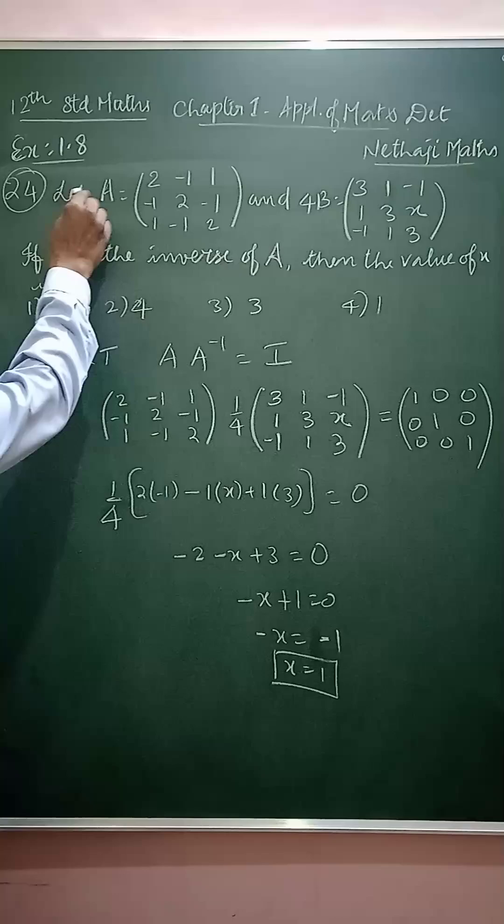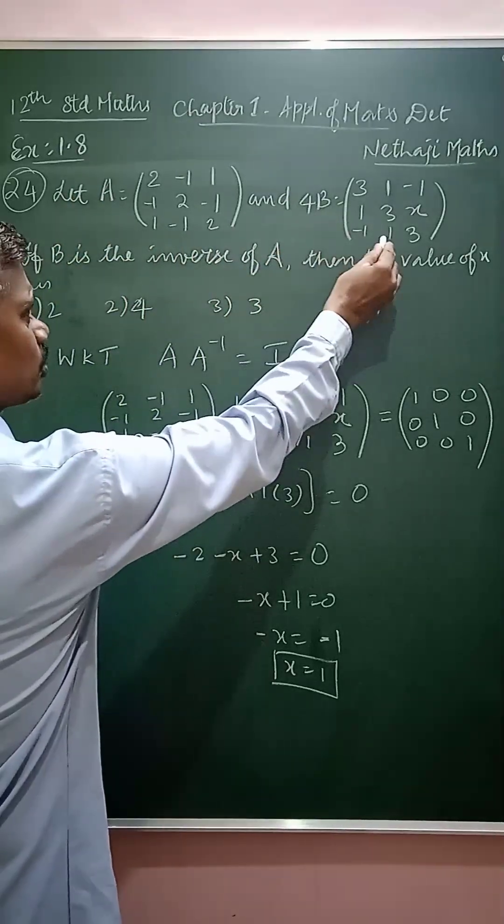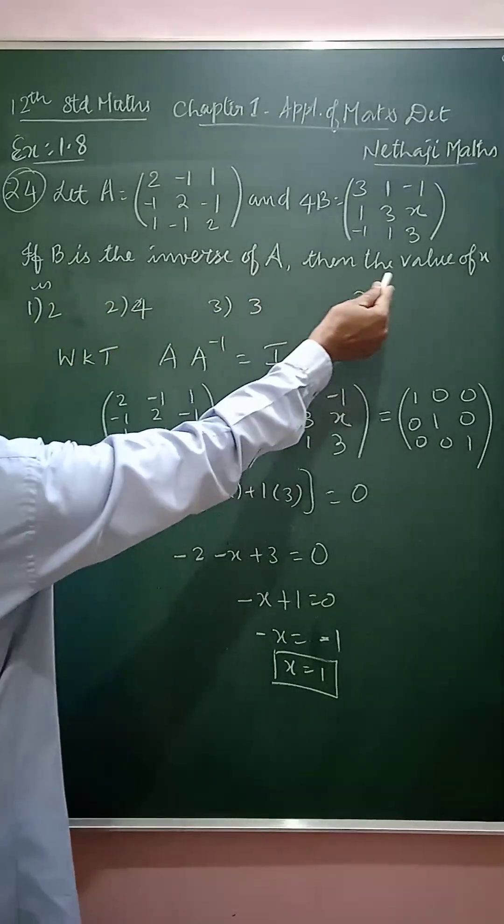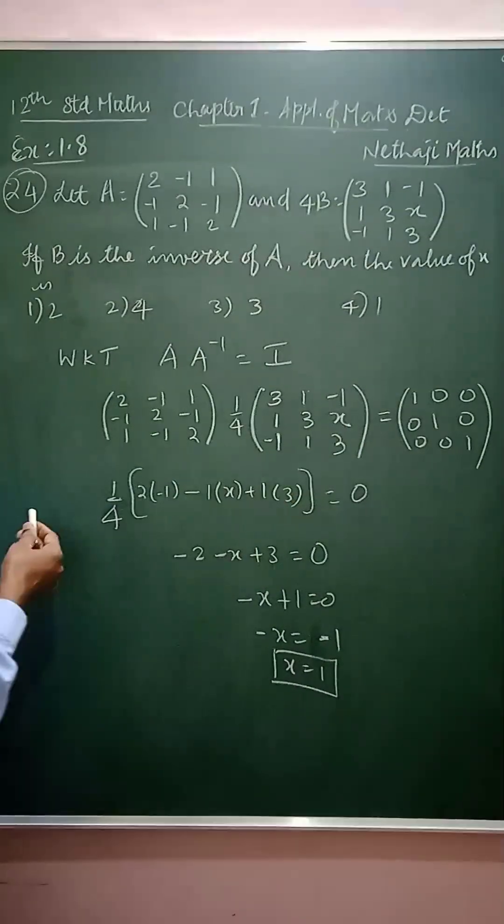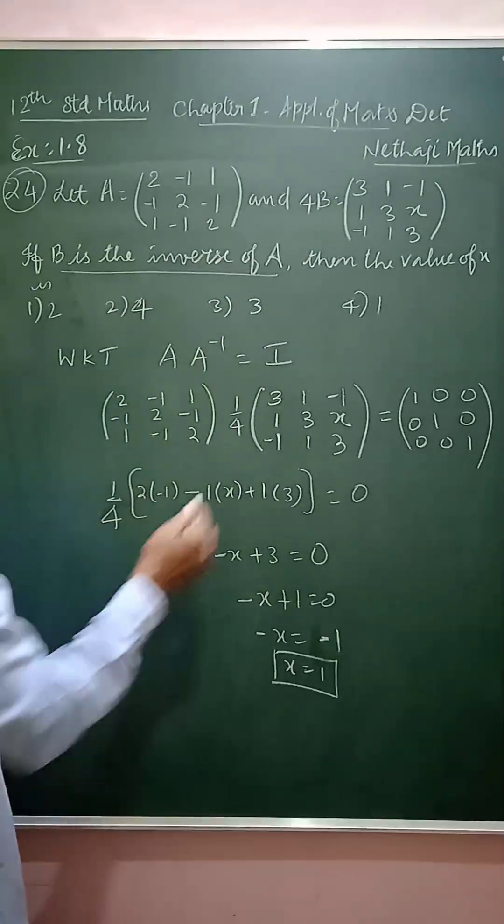Next, in the 24th sum, the question is: let A equal a 3 by 3 matrix and B equal another 3 by 3 matrix. If B is the inverse of A, then find the value of x.